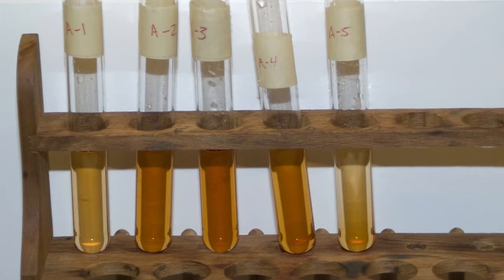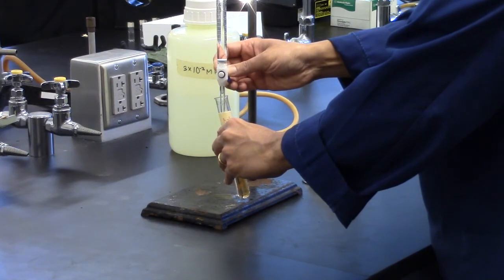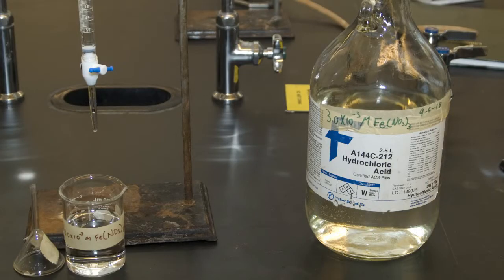We will prepare five samples, which will have increasing moles of iron-3-plus and decreasing moles of thiocyanate. Burettes are used to measure the samples. One burette has 3.0 times 10 to the minus 3 molar iron-3 nitrate,